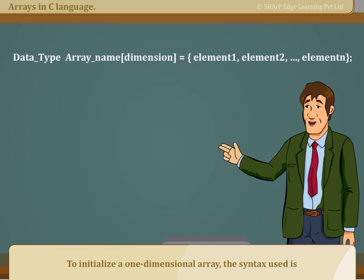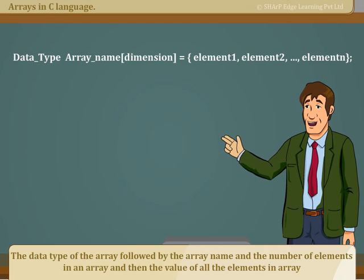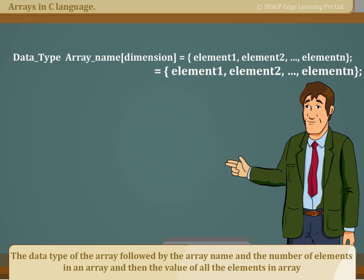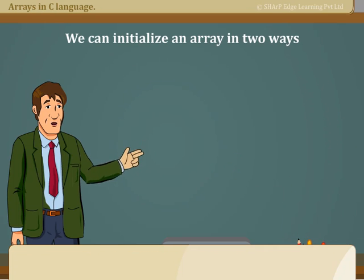To initialize a one-dimensional array, the syntax used is: the data type of the array followed by the array name and the number of elements in an array and then the value of all the elements in array. We can initialize an array in two ways.